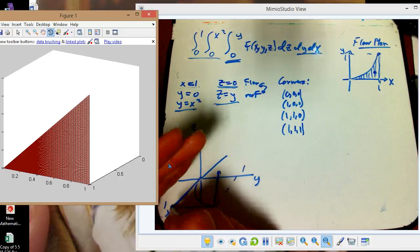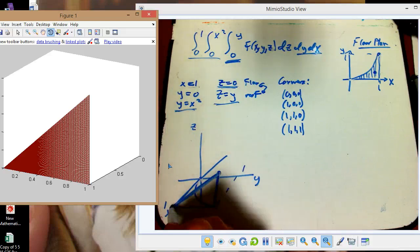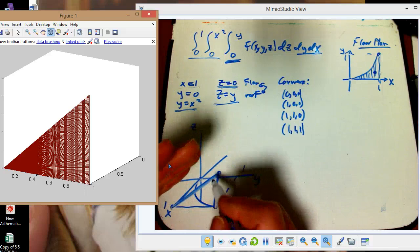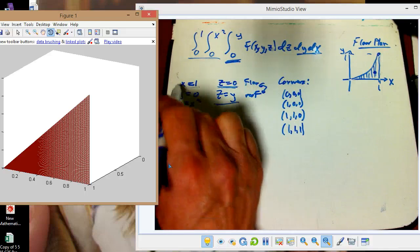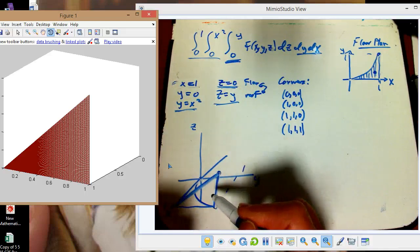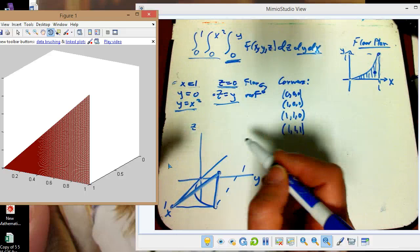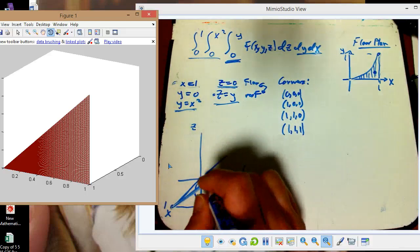And then there's going to be an edge connecting these two corners. Usually for any two corners, there's usually an edge connecting them, but not guaranteed. You really have to think about it. That's going to be where the x equals 1, the front wall, intersects the sloping roof. And we're almost ready. We're almost done.